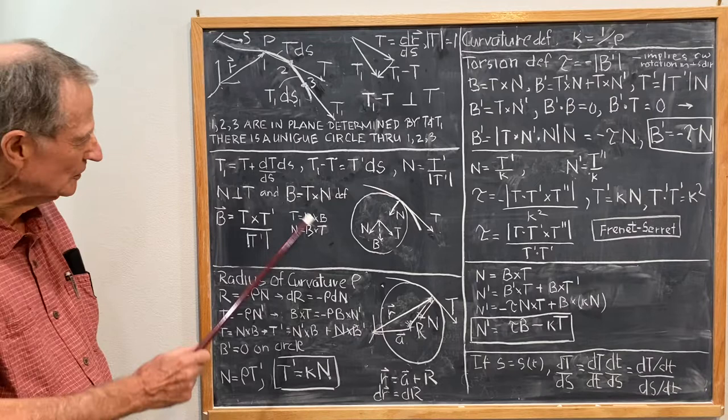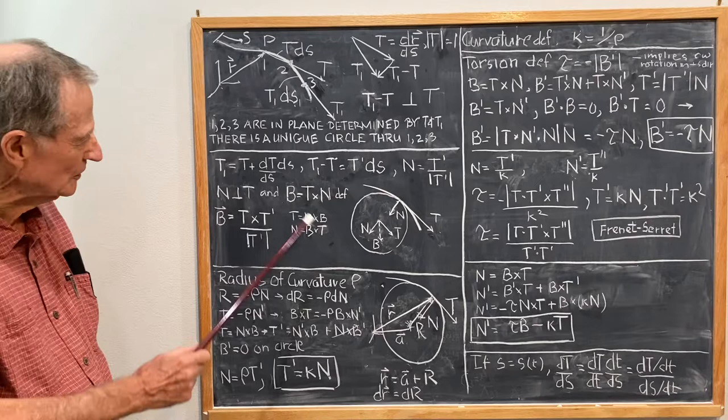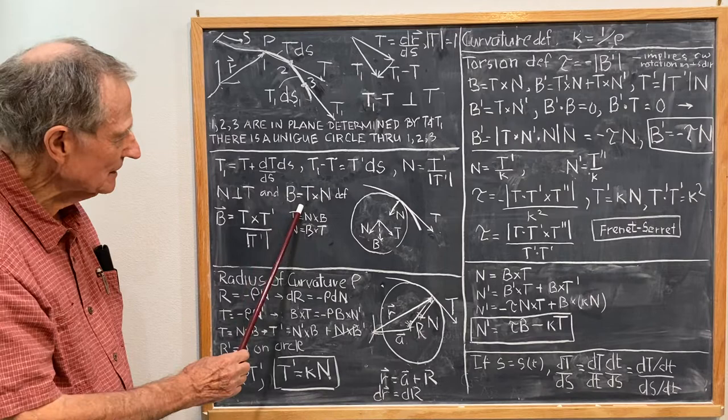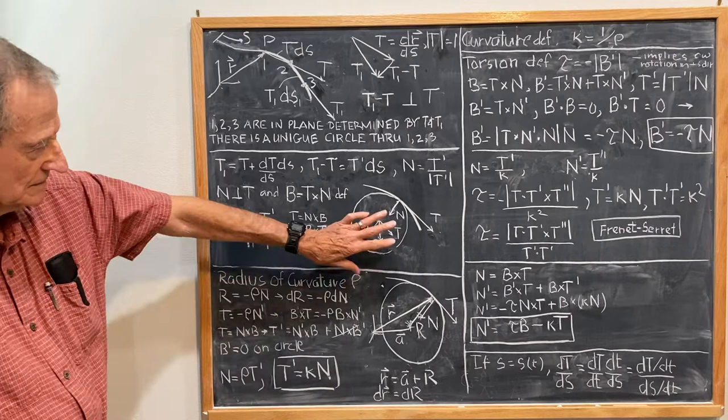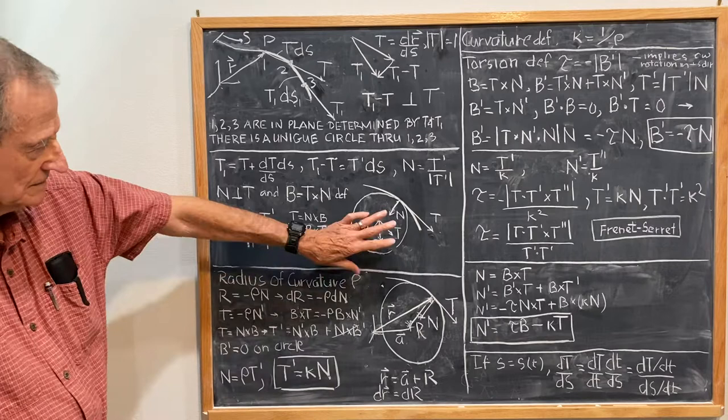So I finally conformed to the usual convention, and I defined B as T cross N, which makes B a vector pointing into the plane rather than out of the plane, the osculating plane.